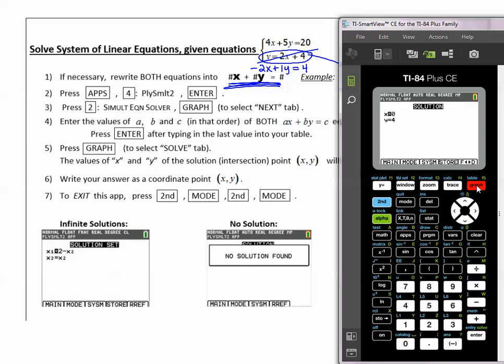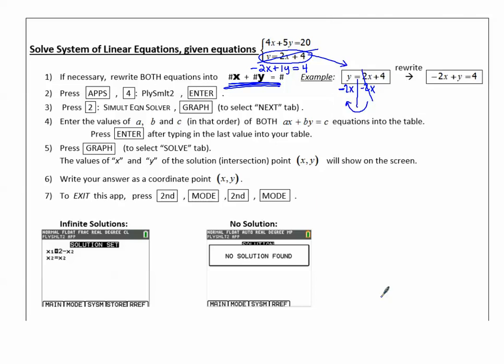Now we will press solve, and it gives us our solution: x is 0, and y is 4. So we say, write our answer as a coordinate point. We will write this one as (0, 4).